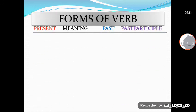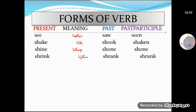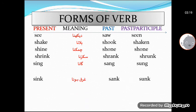And the rest of the verbs are: See, saw, seen — dekhana (to see). Shake, shook, shaken — hilana (to shake). Shine, shone, shone — chamakna (to shine). Shrink, shrank, shrunk — sukarna (to shrink). Sing, sang, sung — gana (to sing).